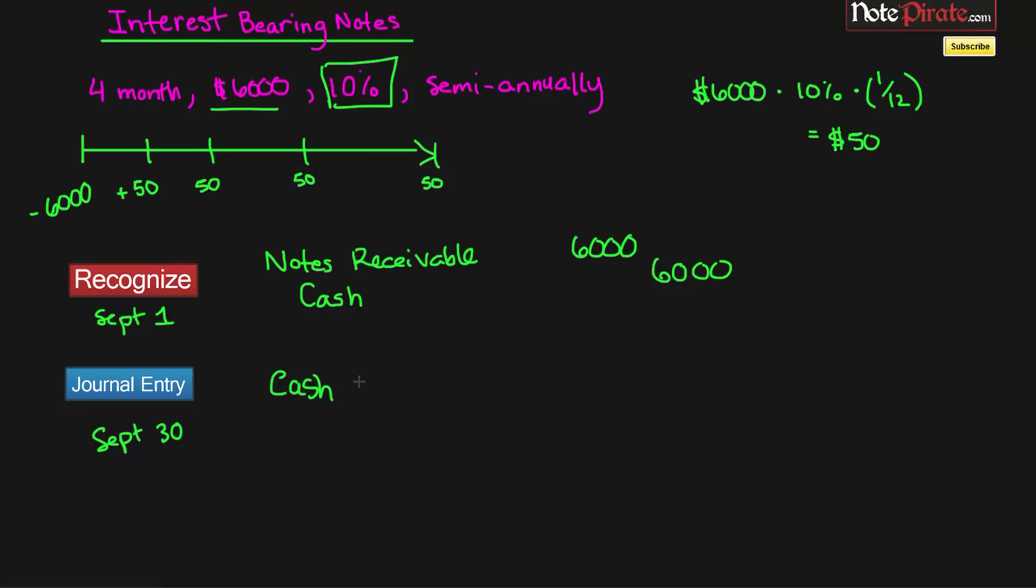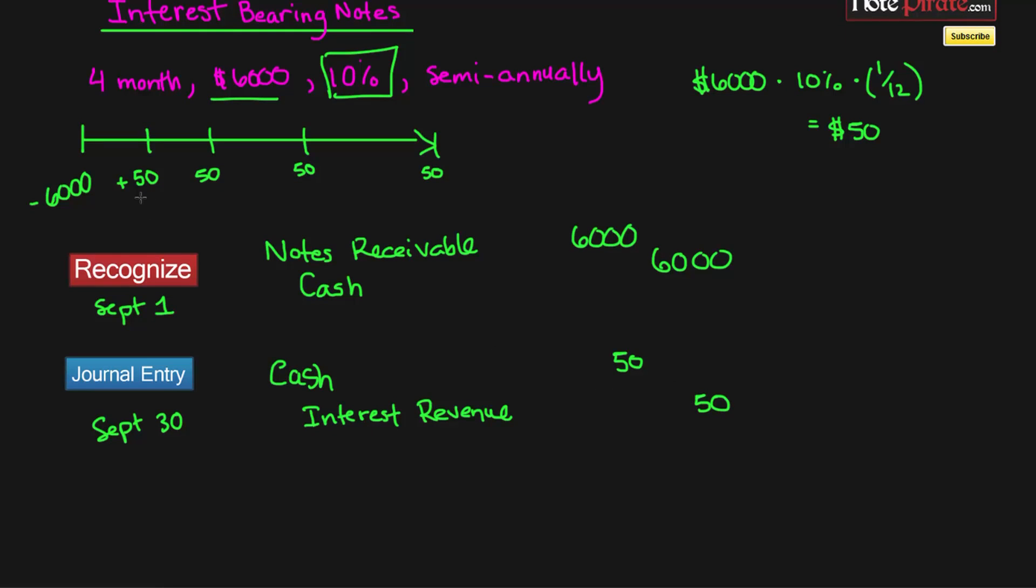We're receiving cash so we need to debit cash for $50. What will be the credit? We have this revenue of cash coming in, so we need to report interest revenue, and we're crediting it because we're increasing interest revenue—that will be a credit of $50. All of these periodic interest payments are the same, so for October 31st and November 30th, they're going to be exactly the same. We're just going to have three of those entries.